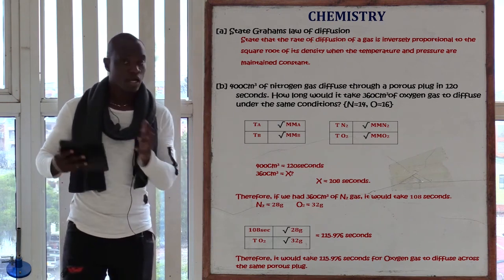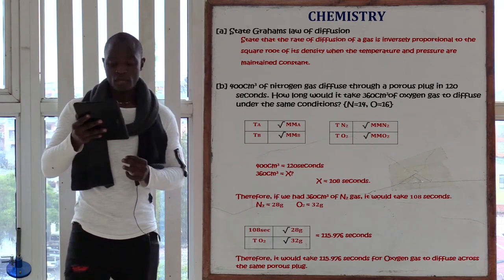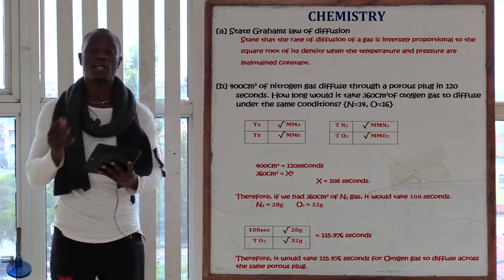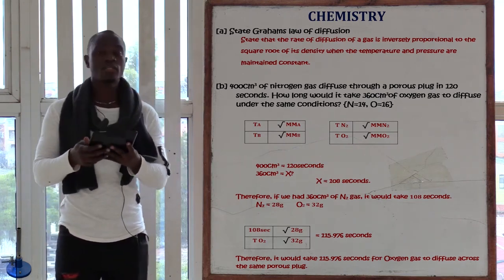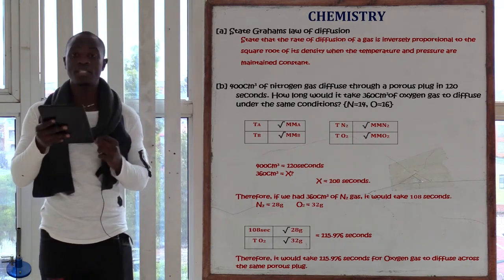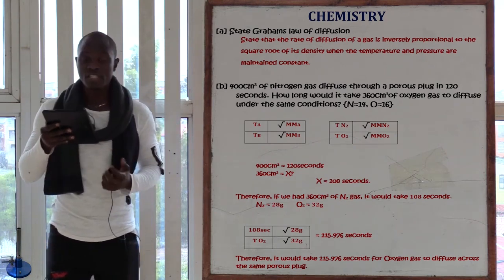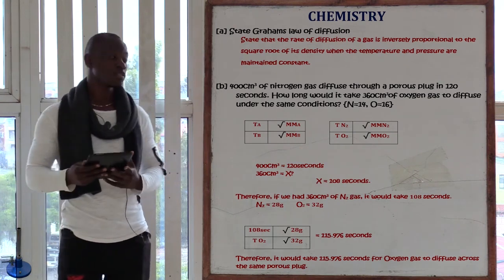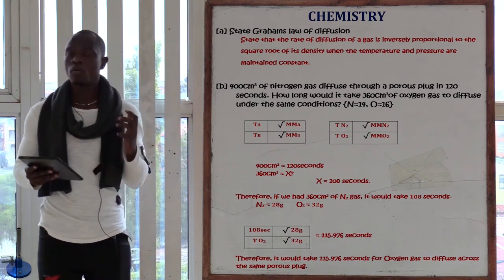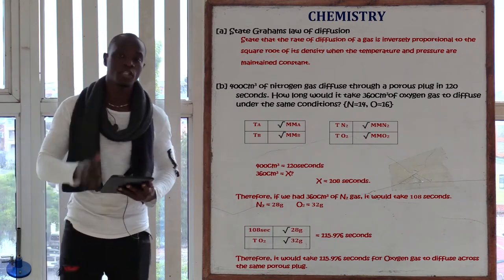Part B: 400 centimeters cubed of nitrogen gas — take note, this is nitrogen gas, not nitrogen atom — diffuses through a porous plug in 120 seconds. How long will it take 360 centimeters cubed of oxygen gas to diffuse under the same conditions?